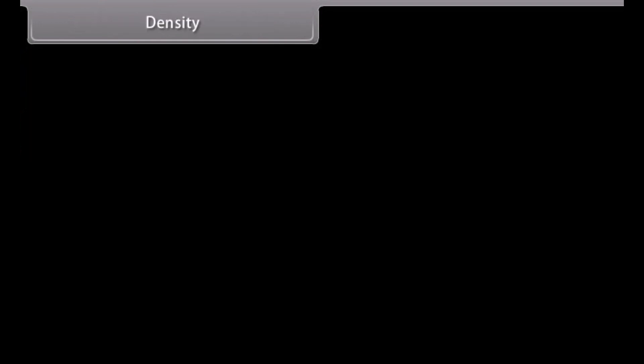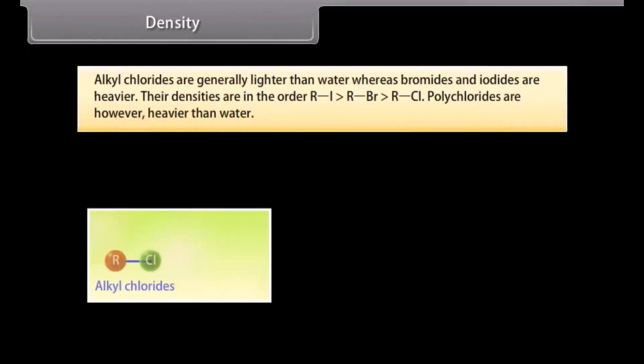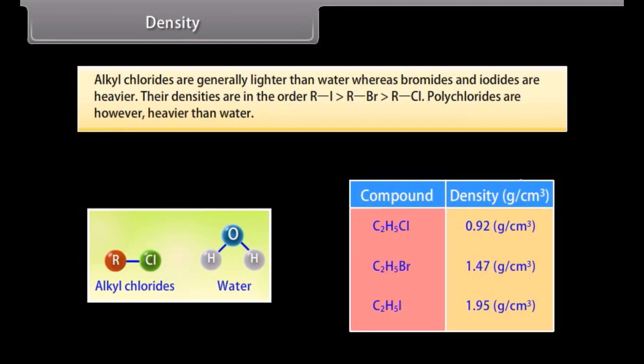Density: Alkyl chlorides are generally lighter than water, whereas bromides and iodides are heavier. The densities are in the order RI > RBr > RCl. Polychlorides are, however, heavier than water.